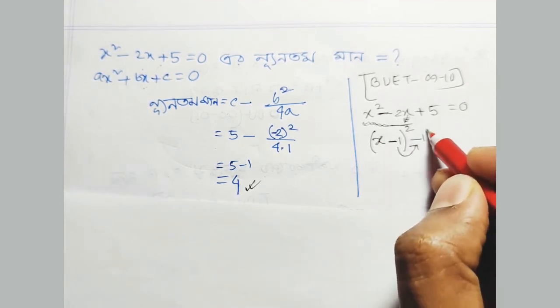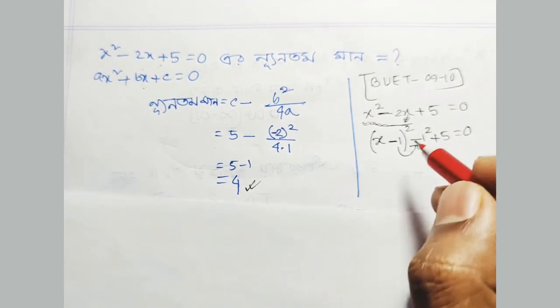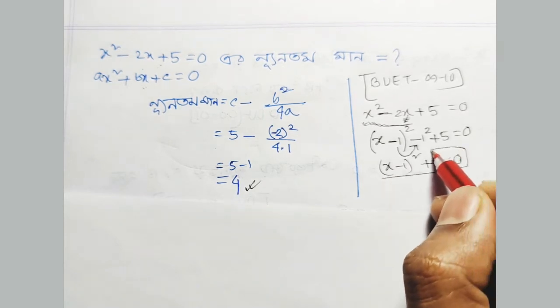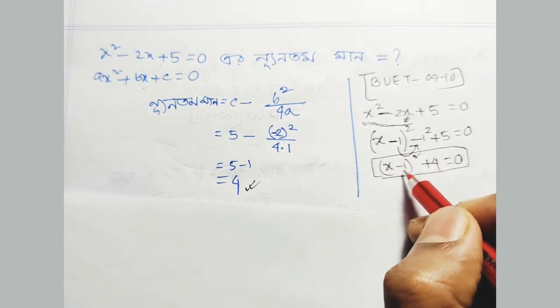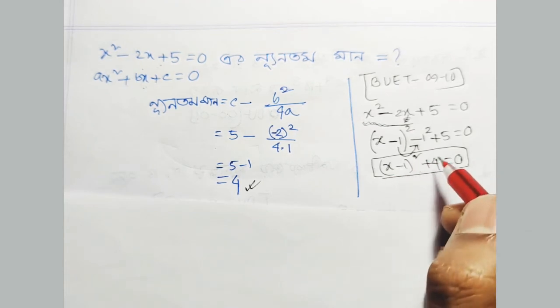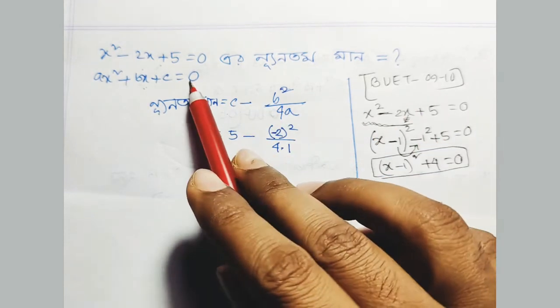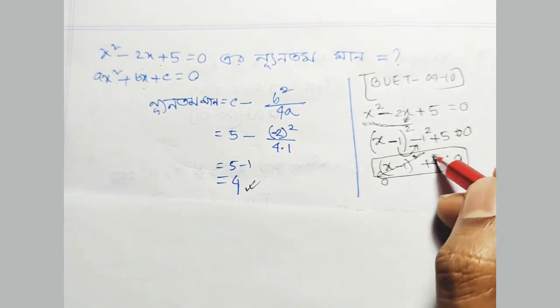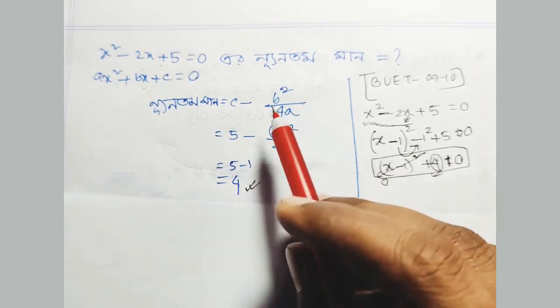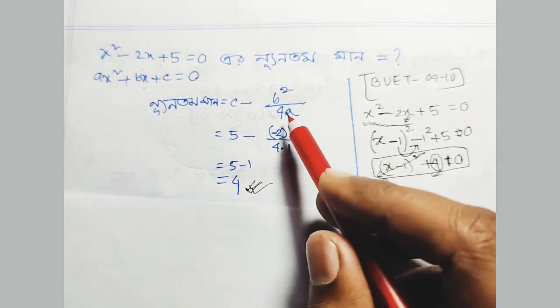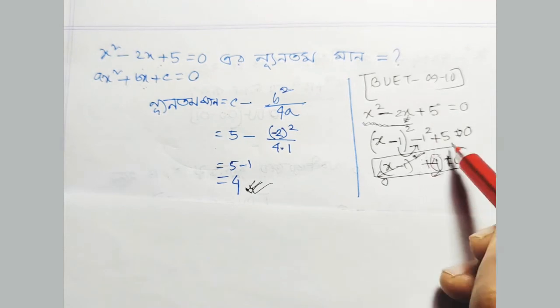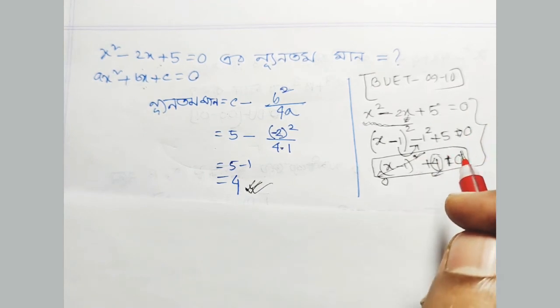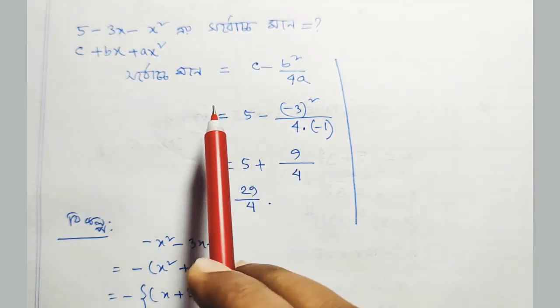When completing the square, x² becomes (x + a)² plus some constant. For example, (x - 1)² + 5/4 = 0. Since x minus one whole square is always positive or zero, and we're adding 5/4, the minimum value is 5/4, which is always positive. This means the equation has no real solutions.